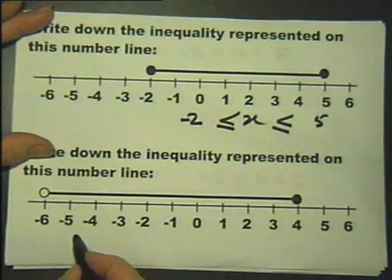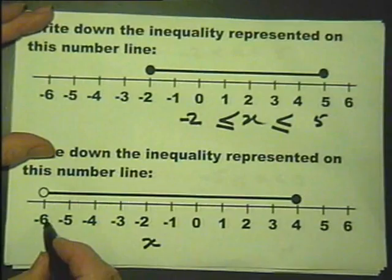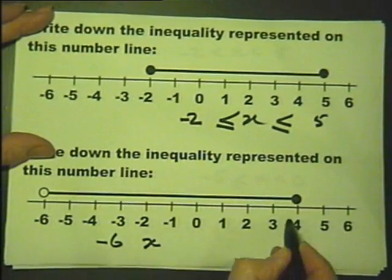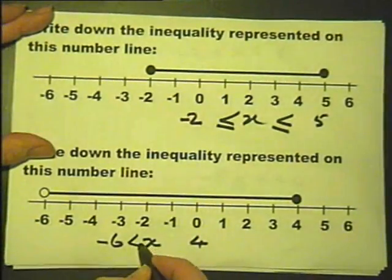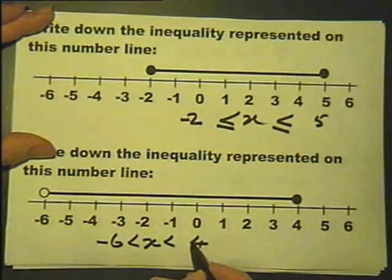And the last one: x goes from minus 6 to plus 4, so x is between minus 6 and plus 4, and it includes 4.